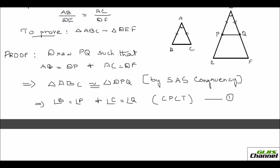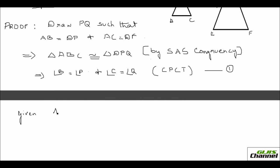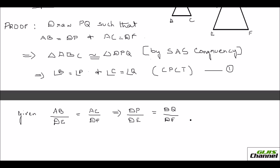Now let me take the given proportional sides: AB over DE equals AC over DF. Since AB equals DP and AC equals DQ, I can rewrite this as DP over DE equals DQ over DF. Flipping this gives DE over DP equals DF over DQ.